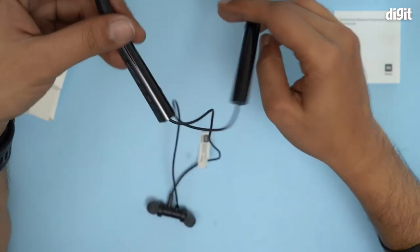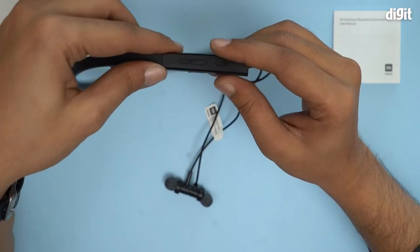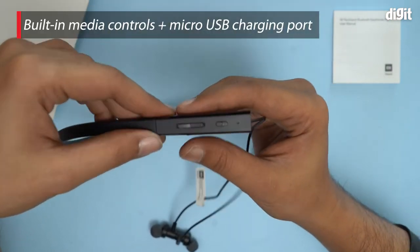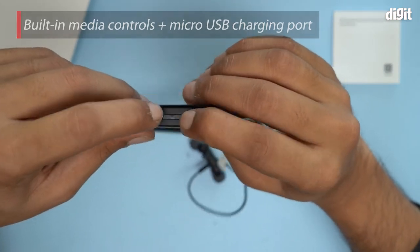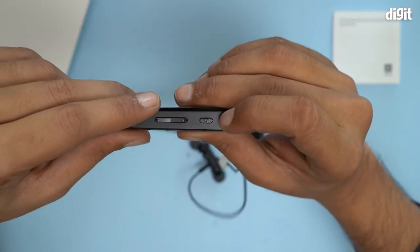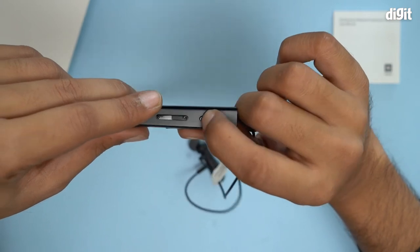These are the modules of this particular neckband and this is the inline remote. Get it closer to the camera. Very stylish looking inline remote. The volume buttons are super sleek and stylish. This is the multi-function button.